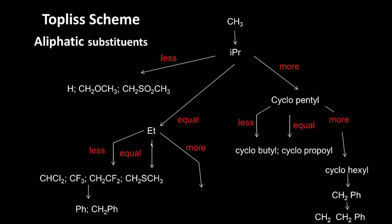Similarly, you can do aliphatic substitutions. Imagine you have a CH3 — you replace it with isopropyl. Activity can increase, be equal, or be less. If it is more, instead of isopropyl you may replace with cyclopentyl. If activity increases you go to cyclohexyl, then CH2-phenyl, then CH2-CH2-phenyl — ending up with a very highly active compound. If activity does not change after cyclopentyl, you may go to cyclopropyl. If activity decreases, you reduce from cyclopentyl to cyclobutyl.